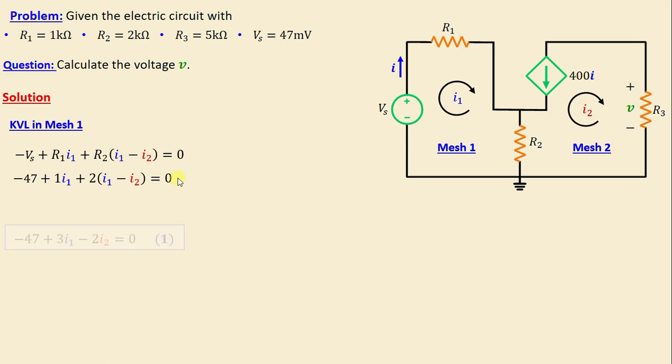If we continue simplifying this equation, we obtain: -47 + 3i1 - 2i2 = 0, and I will call this equation (a).